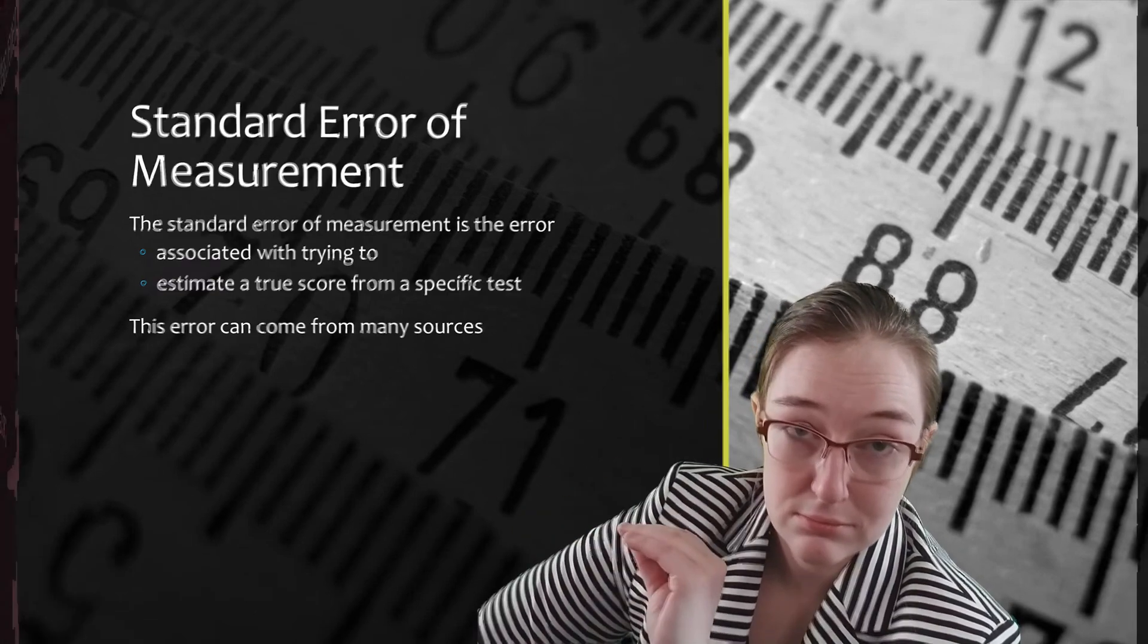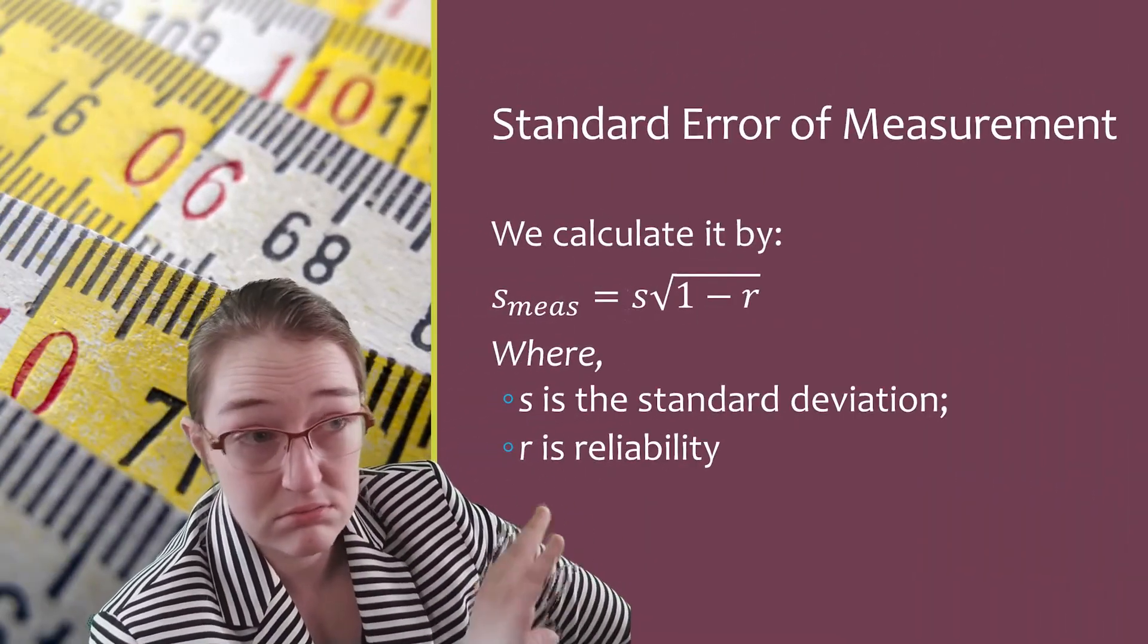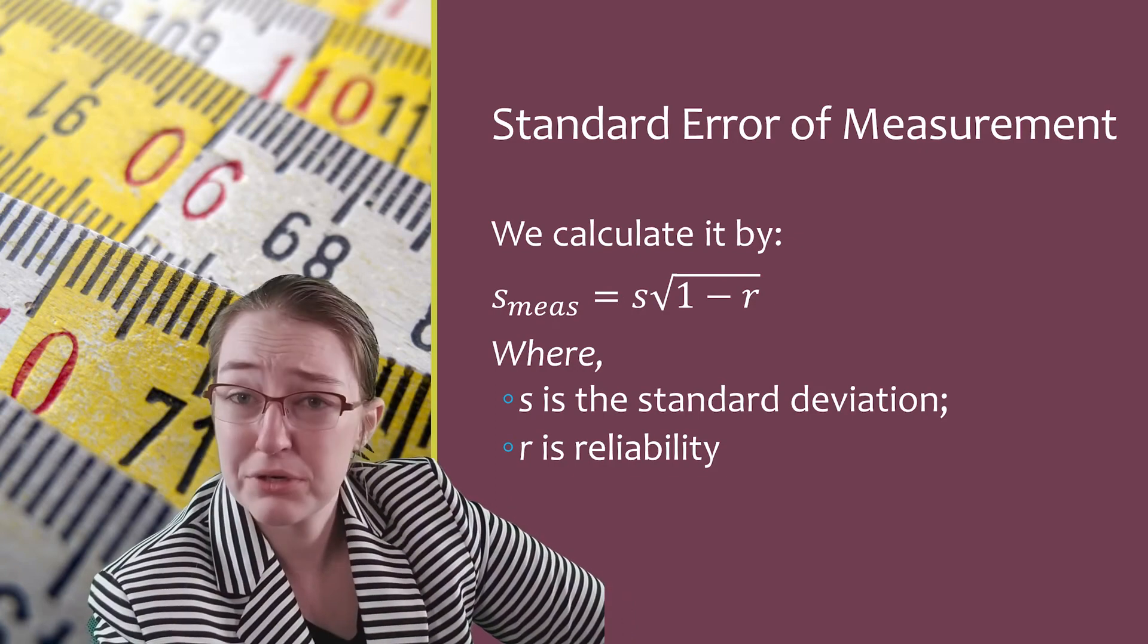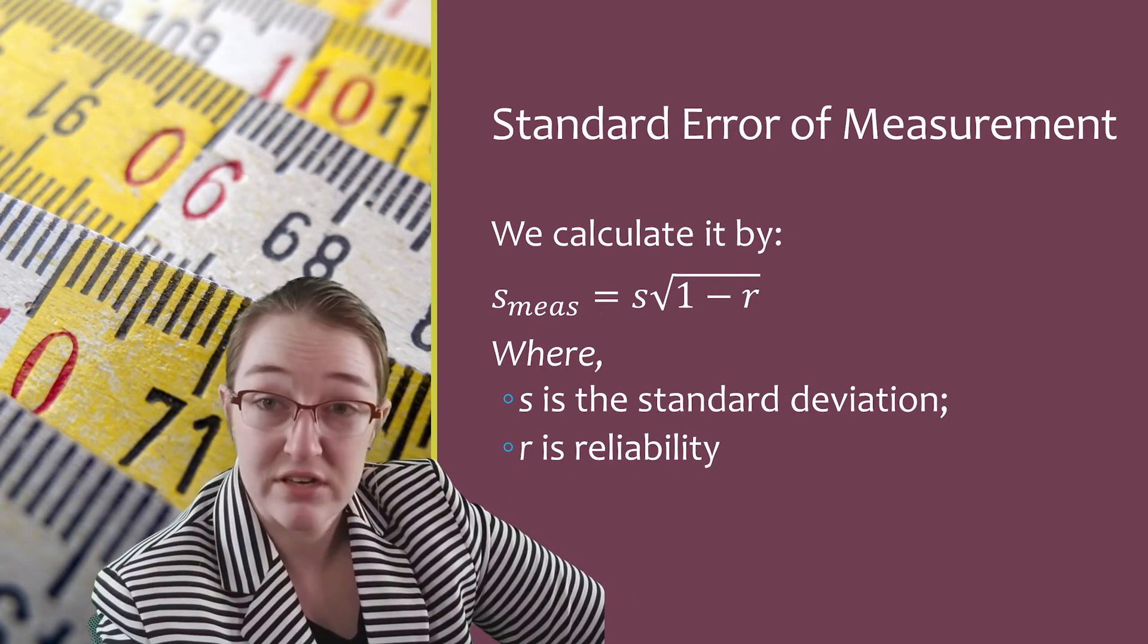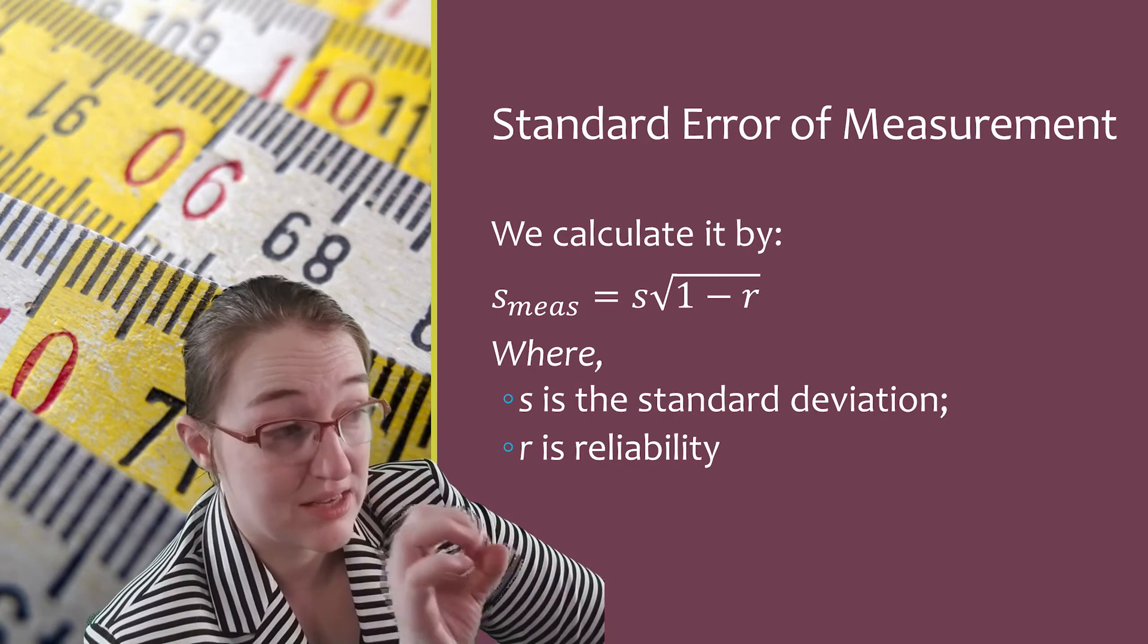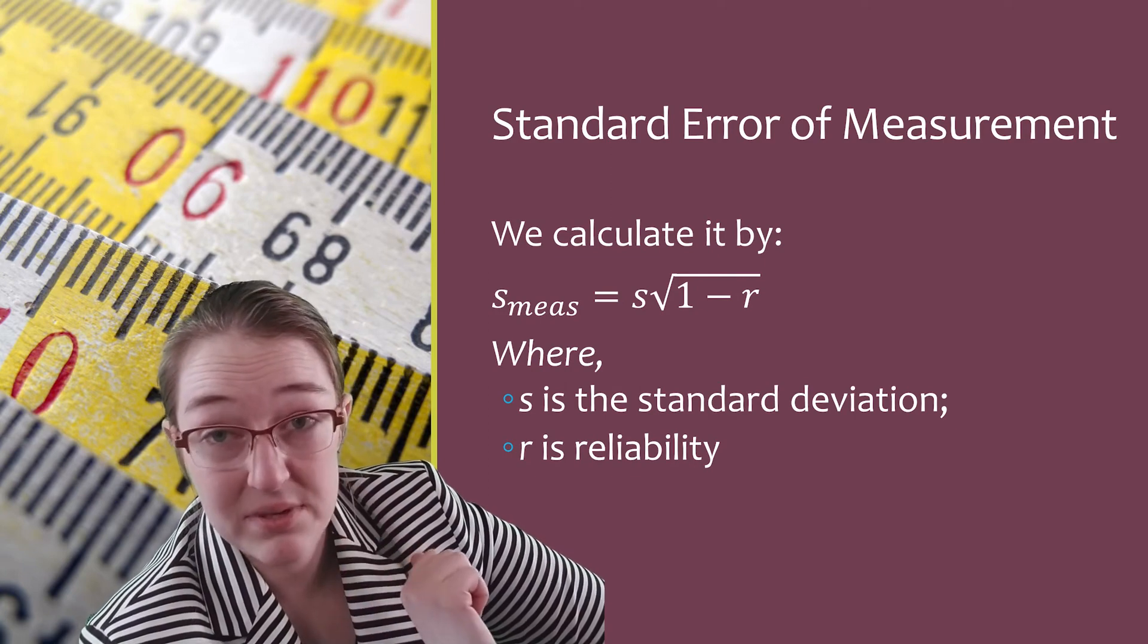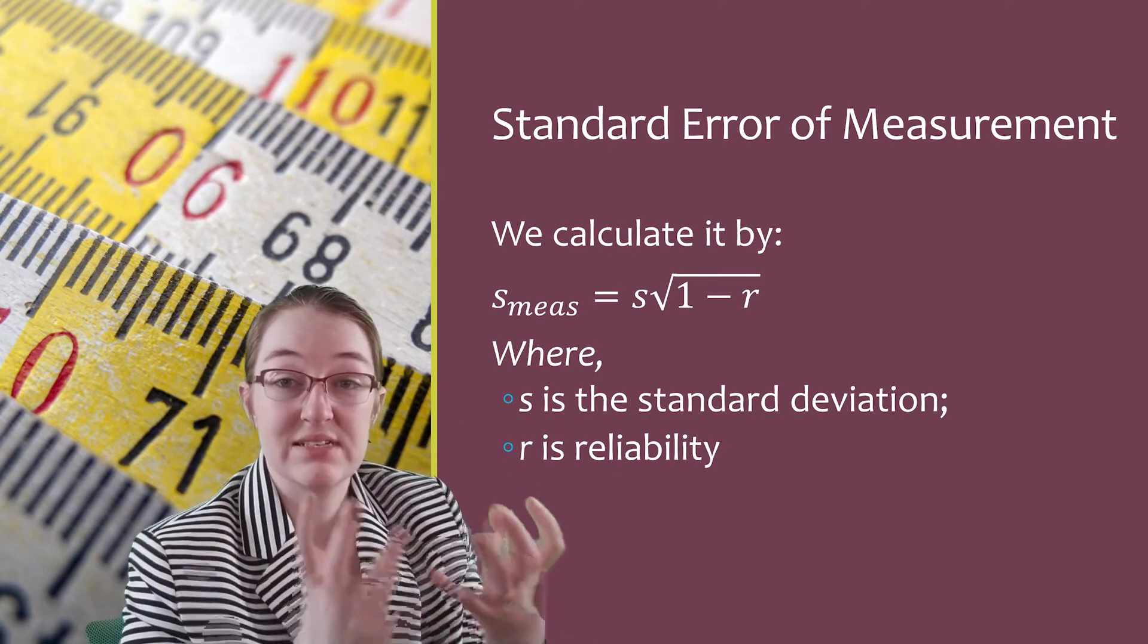That's it. Cool. It's really straightforward. I've got equations all floating over the place, including right here, where we can calculate standard error of measurement just by multiplying the standard deviation times the square root of 1 minus our reliability. That's it. And that gives us a really nice estimate.